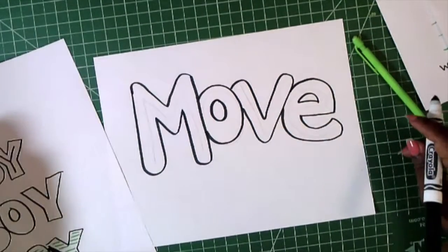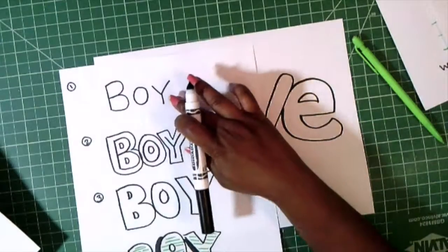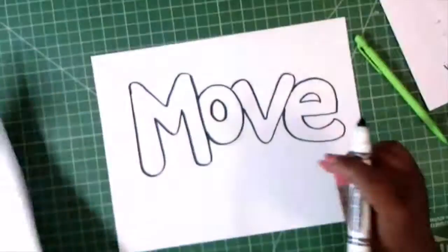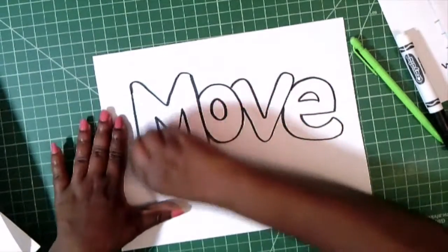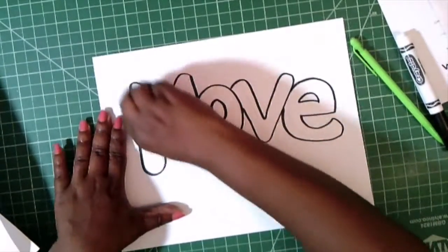After I have taken care of step one and step two, which was to handwrite my letters and then draw the bubble around each letter, I must erase my handwritten letters. So I'm going to erase them so I no longer see them.